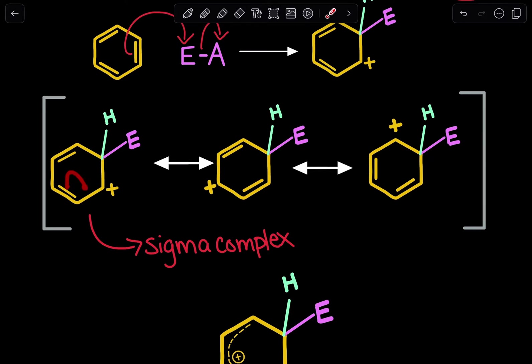But as a result, since these electrons are going over here, this carbon will now only have three bonds with that third bond to hydrogen and it will now have that positive charge.